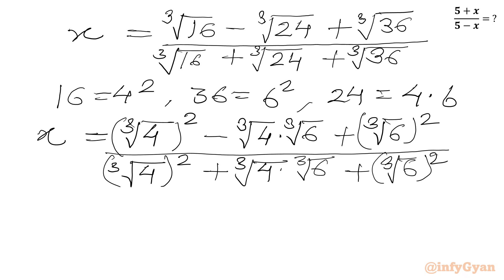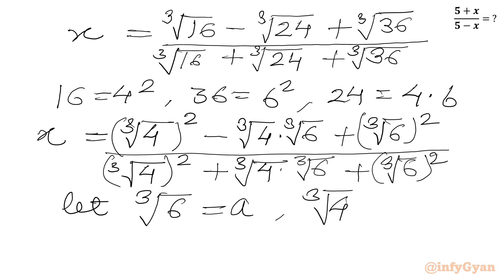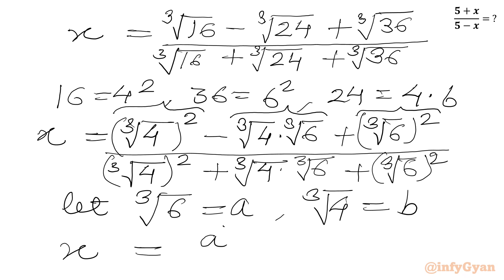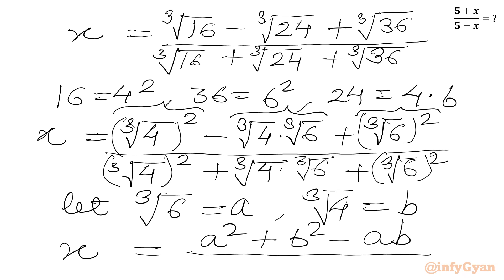Now if we consider a equals cube root 6 and b equals cube root 4, we can identify that in the numerator we have a squared minus ab plus b squared, and in the denominator we have a squared plus ab plus b squared.